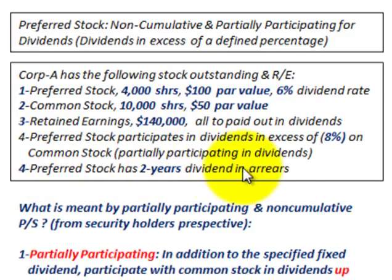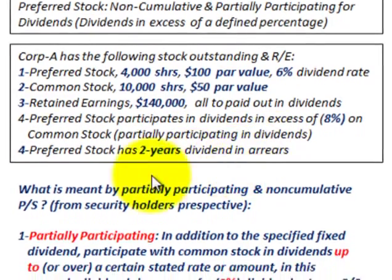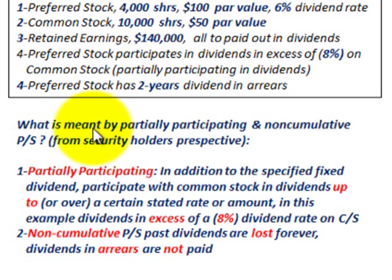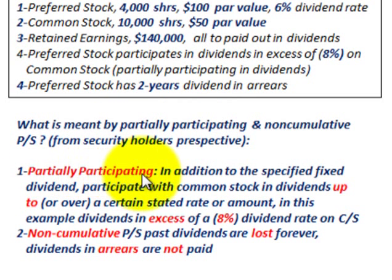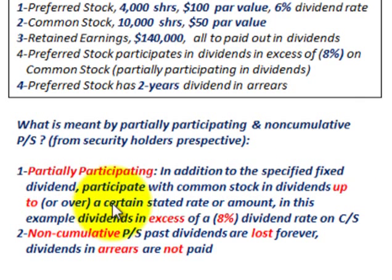The preferred stock has two years of dividends in arrears. The first thing we have to answer is: what is meant by partially participating and non-cumulative preferred stock? For partially participating — in addition to the specified fixed dividend, you participate with the common stock in dividends up to or over a certain stated rate or amount.